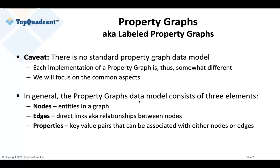In general, in the property graph data model, we have three elements. There are nodes, which are entities — nodes in a graph. There are links between them, also called edges, which are relationships between nodes. And then there are properties — key-value pairs that hang off either nodes or edges.